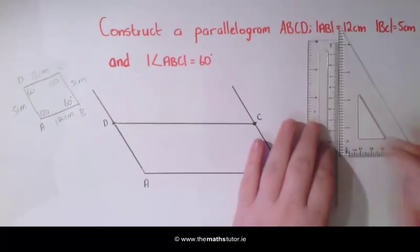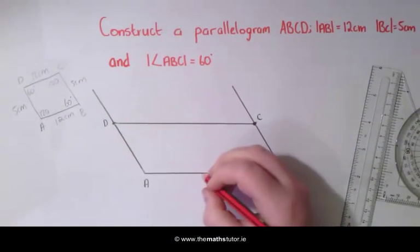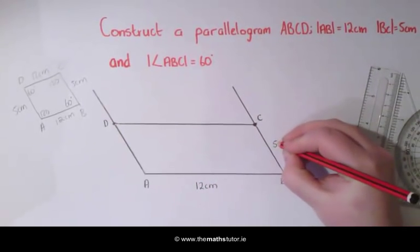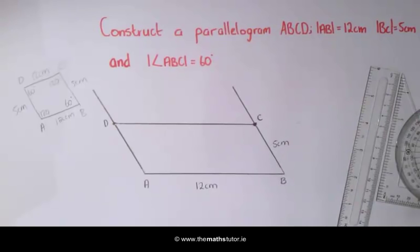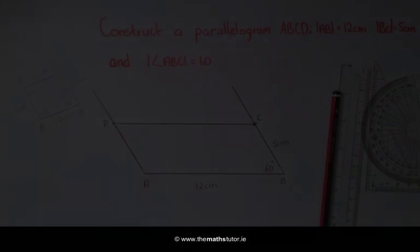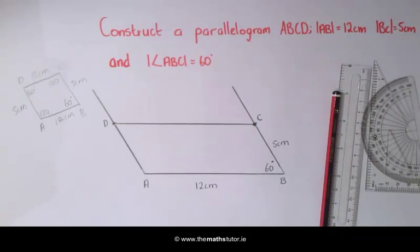And here we have our parallelogram where AB is 12 cm, BC is 5 cm, and the angle ABC is 60 degrees. Try this for yourself and we will see you in the next lesson.